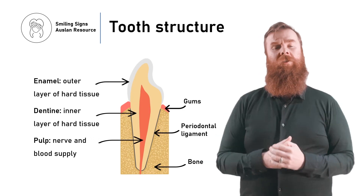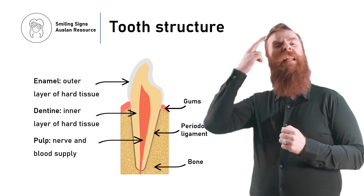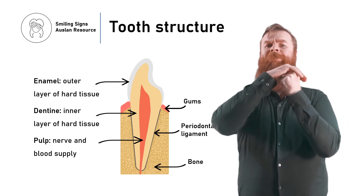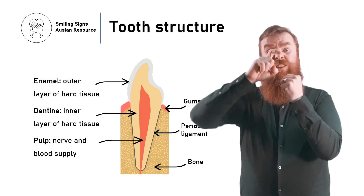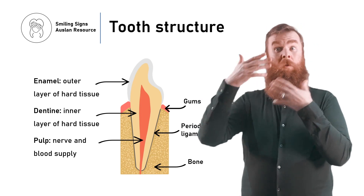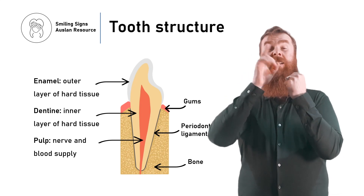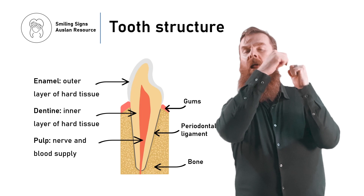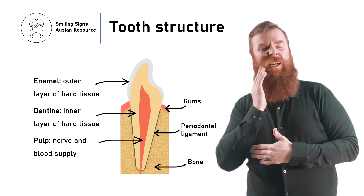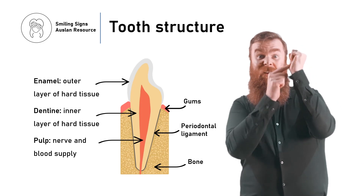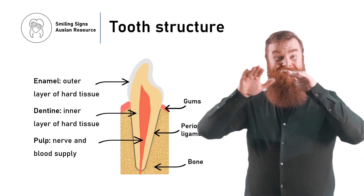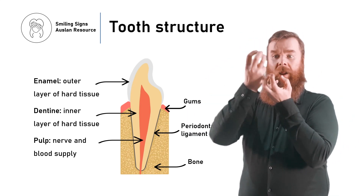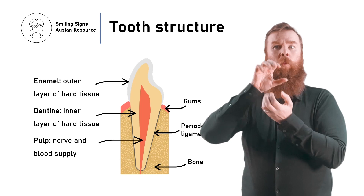Teeth have two main layers called enamel and dentine. Enamel is the white, hard outside layer that covers the crown of the tooth. Damage to enamel does not cause pain. Dentine is located inside the enamel and is more yellow in colour. Damage to dentine can cause pain or sensitivity. The enamel and dentine protect the nerve and blood vessels in the middle of the tooth, called the pulp. The teeth are held in place by bone, and the bone and some parts of the teeth are covered by gums.